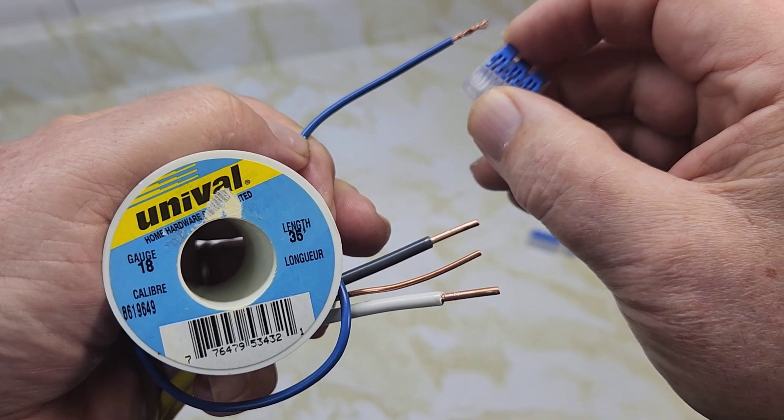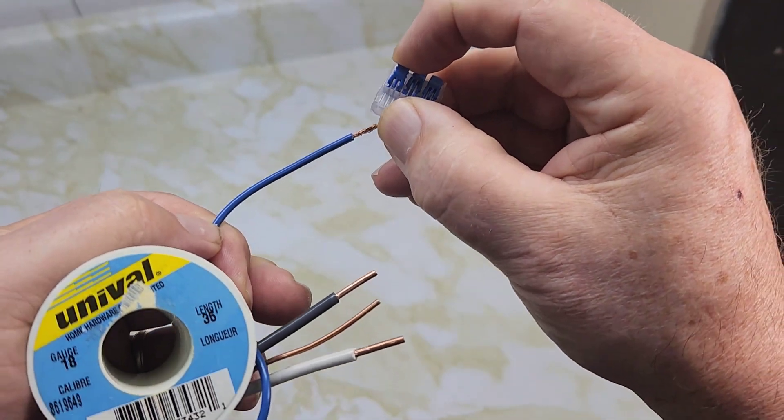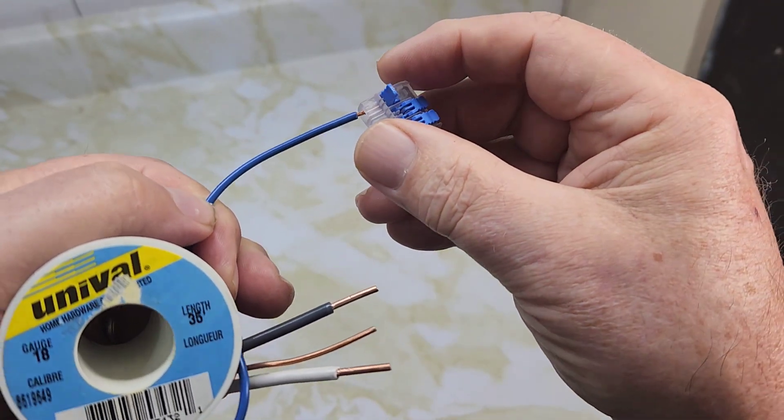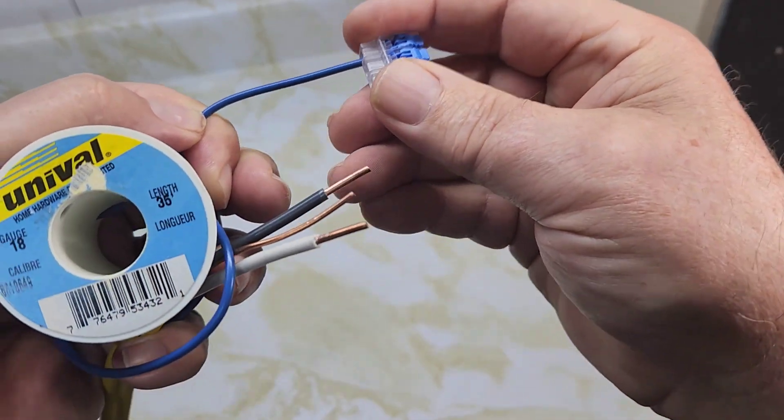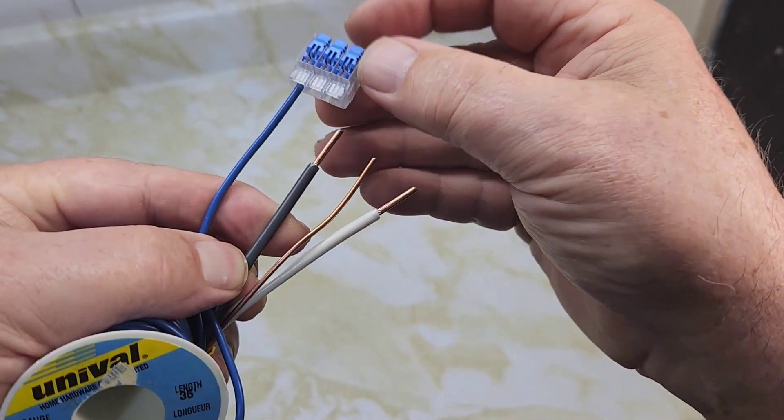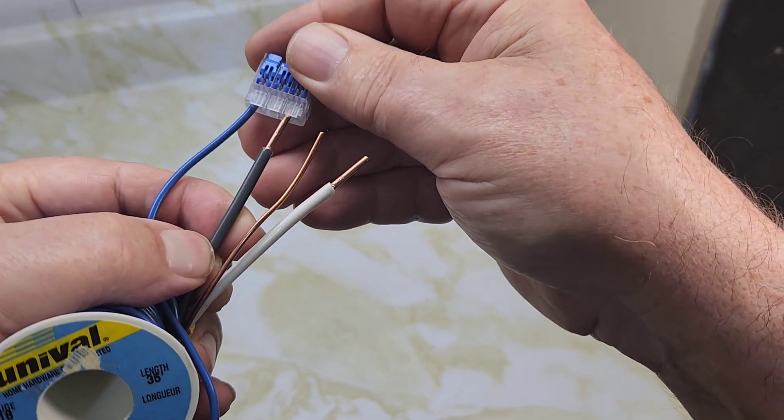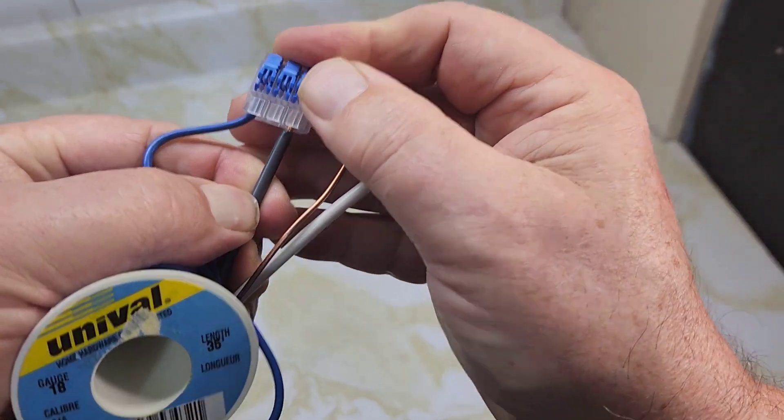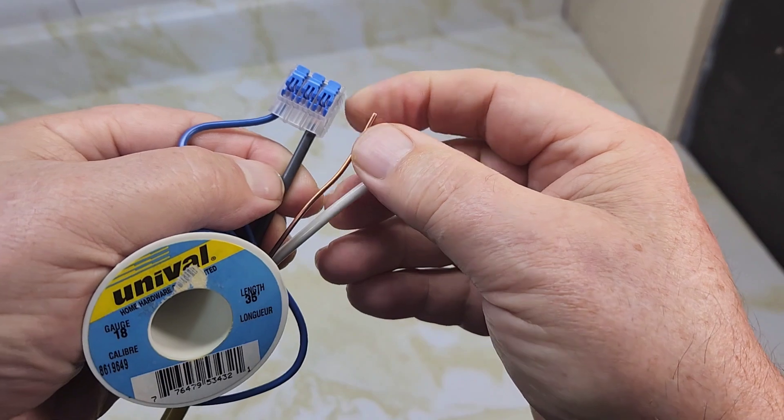Number 18 stranded wire. They want you to flip the lever up here to put the stranded wire in. That's secure. And while we're at it, this is a number 12 wire, so you don't have to flip the lever - just have to push it. There it goes.